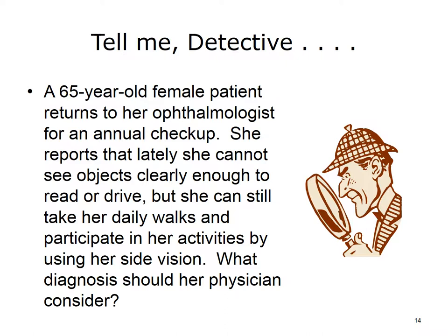Did you guess macular degeneration? Macular degeneration, or age-related macular degeneration, is a leading cause of vision loss in adult patients 60 and older. This disease causes the destruction of your sharp central vision. Without central vision, you cannot see objects clearly and cannot read or drive. Macular degeneration is a progressive disease that does not hurt, but it causes cells in the macula to die.